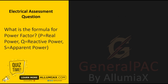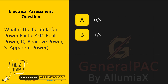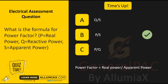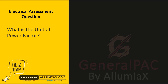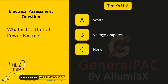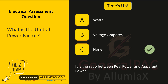What is the formula for power factor? Is it A: Q divided by S, B: P divided by S, or C: P divided by Q? Time's up. The answer is B: P divided by S. Power factor equals real power divided by apparent power. What is the unit of power factor? A: Watts, B: Volt-amperes, C: None. Time's up. The answer is C: None. It is the ratio between real power and apparent power.